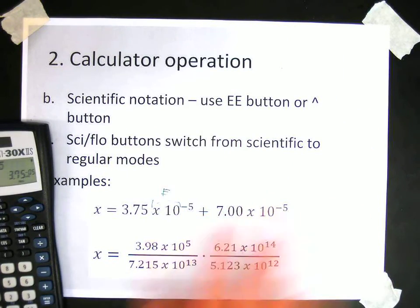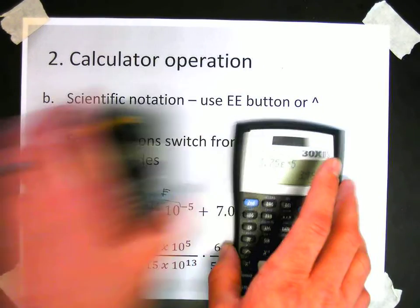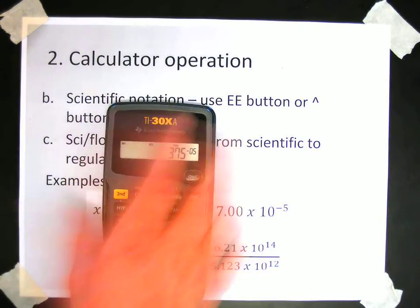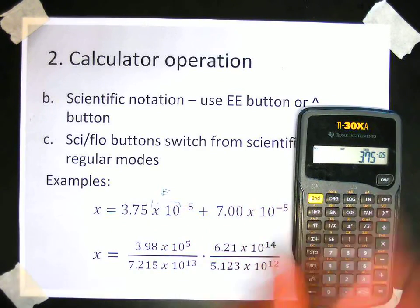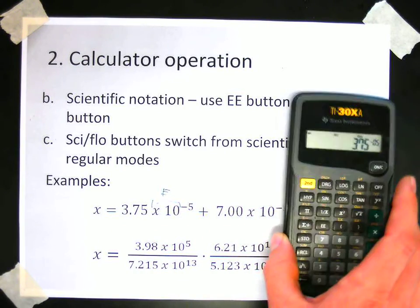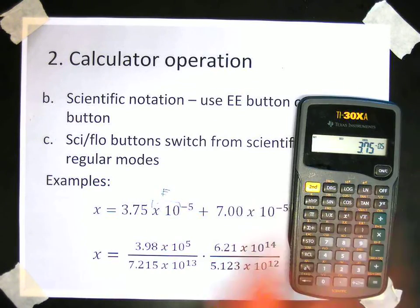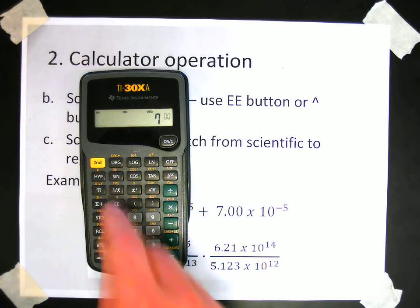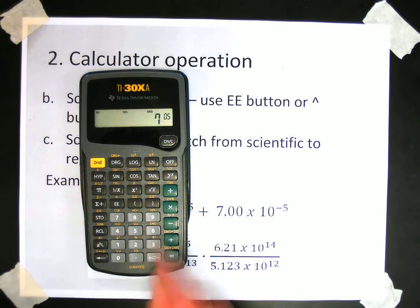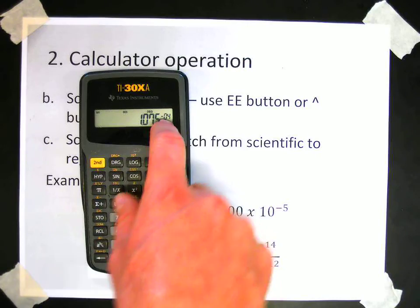So if I want to do a math problem now, I have those numbers typed in as scientific notation. Now I just need to add this number in scientific notation. So 3.75 times 10 to the negative 5th plus 7 times 10 to the negative 5th. 7 E, 5 negative. And then I press equals. So the answer to that is 1.075 times 10 to the negative 4th.